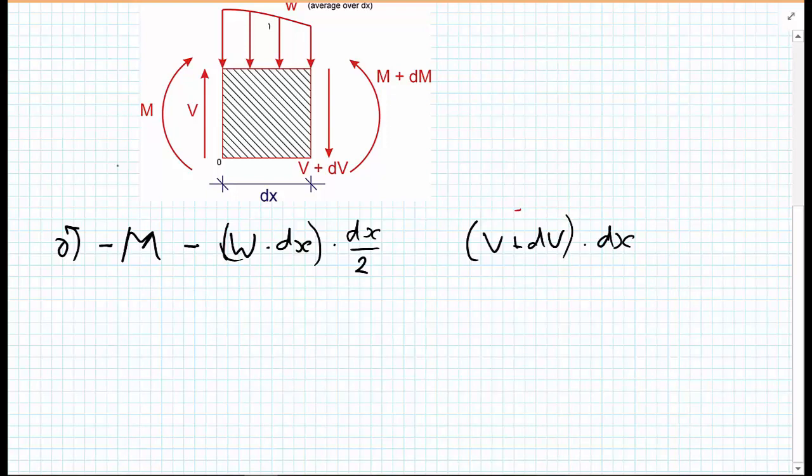This is going in a clockwise motion, so we choose to call it negative. Finally, we have this M plus dM term that is going in an anticlockwise direction, so plus M plus dM. For equilibrium, this all needs to be equal to 0.